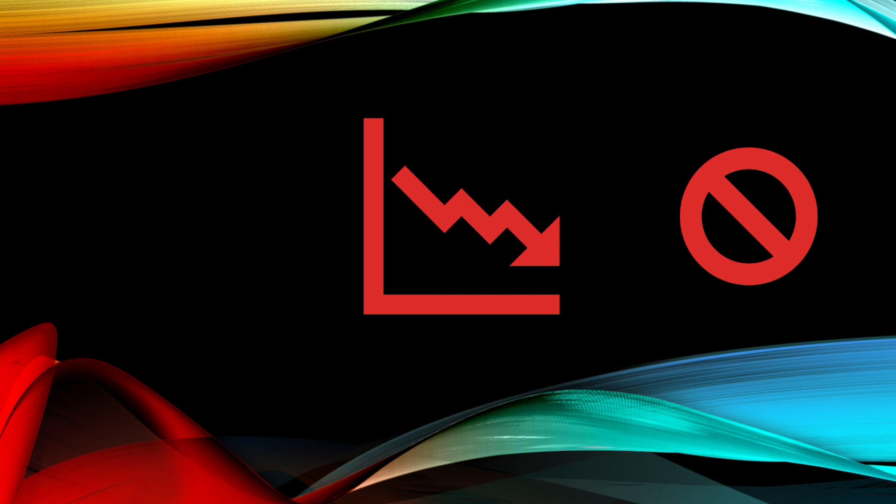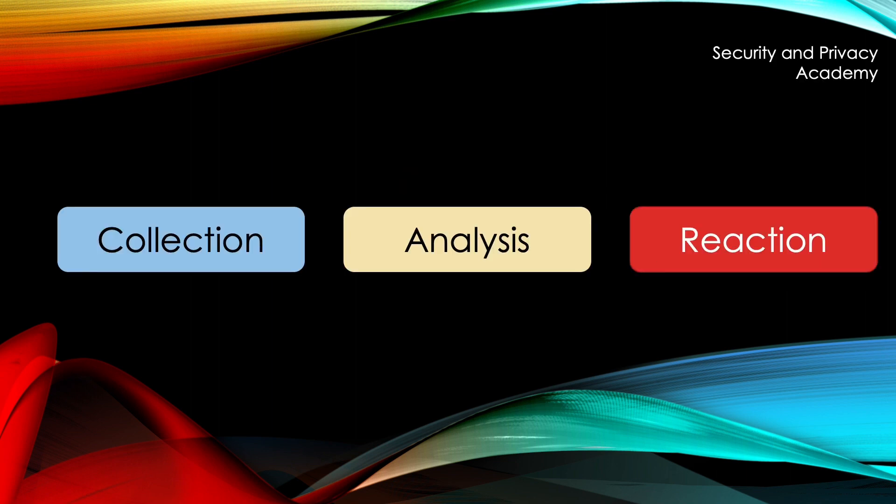An IDS works in three steps: collection, analysis, and reaction. To put it simply, it monitors data, evaluates it, and then acts accordingly. Let's look at each of the steps in a little bit more detail.